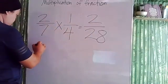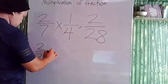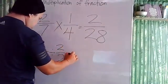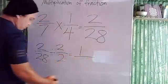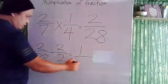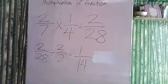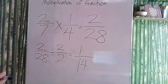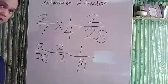Now 2 over 28 is not our final answer because we can still simplify this by dividing them both by 2. 2 divided by 2 is 1, and 28 divided by 2 is 14. So 1 over 14 is our final answer.